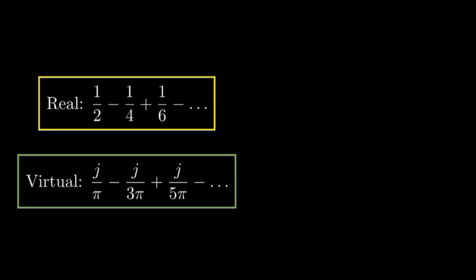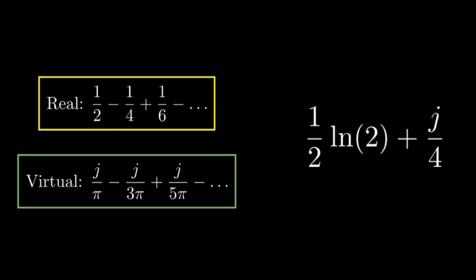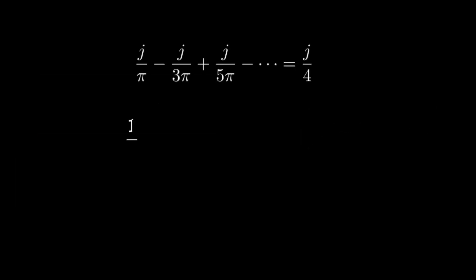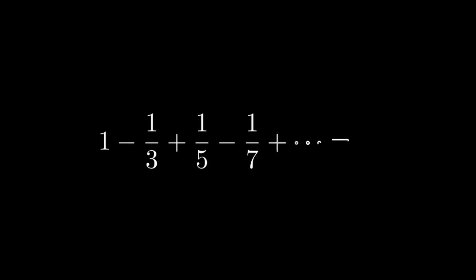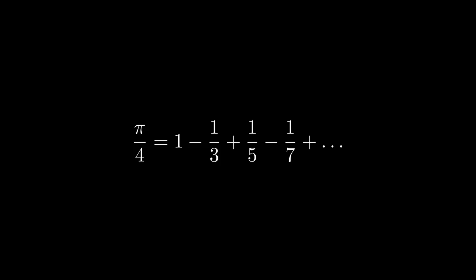Now we'll compare this with the series expansion we derived earlier to extract the formula for pi. From our earlier derivation, we have the sum of one-half minus one-fourth plus one-sixth minus one-eighth and so on, plus j times the sum of one over pi minus one over 3pi plus one over 5pi minus one over 7pi and so on. From the virtual log formula, we have one-half times the natural logarithm of 2 plus j over 4. Equating the virtual components, we obtain one over pi minus one over 3pi plus one over 5pi minus one over 7pi and so on equals one-fourth. Multiplying both sides by pi, we get the famous Leibniz series: pi equals 4 times the sum of 1 minus one-third plus one-fifth minus one-seventh and so on.